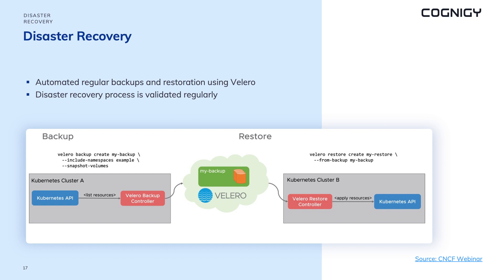Disaster recovery is a process of restoring a system after a disruptive event, such as natural disasters, cyber attacks, power outages, human errors, or system bugs. It involves procedures and policies aimed at minimizing downtime and avoiding data loss, including backing up data, testing the backup, and restoring the system when necessary. At Cognigy, we use Velero, a tool which provides recovery automation and minimizes downtime in case of such events. We also test our disaster recovery procedures and policies regularly to ensure they are effective and up to date.